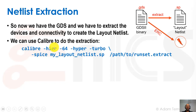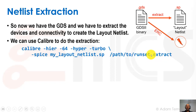We run Calibre with various options to make it faster, then give it the name of the netlist to come out: minus spice my_layout_netlist.sp, which will be the name of the layout netlist. We also give it a path to the run set. A run set is used by all the Calibre tools, and we use a special run set for each one.